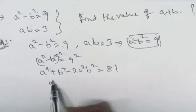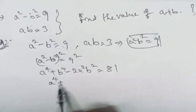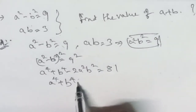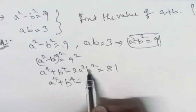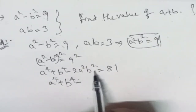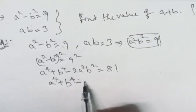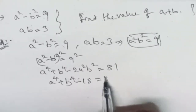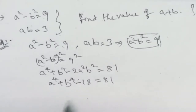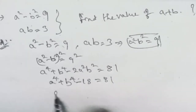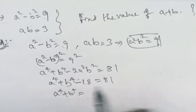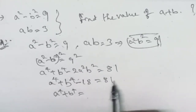Just plug these values in. So a to the power of 4 plus b to the power of 4 minus 2 multiplied by a squared b squared, that is 2 into 9 equals 18. Therefore, a to the power of 4 plus b to the power of 4 is equal to 81 plus 18, which is 99.